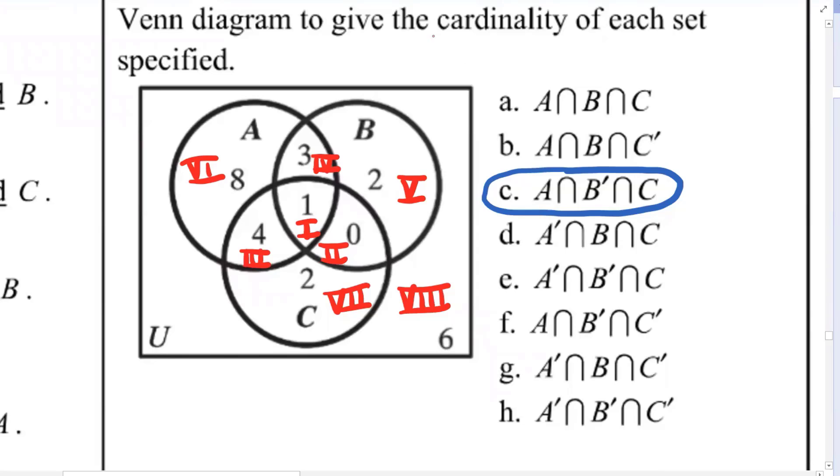So when I say A intersect B complement intersect C, what are the three characteristics we're looking for? They have to be a region that's in A, not in B, and in C.